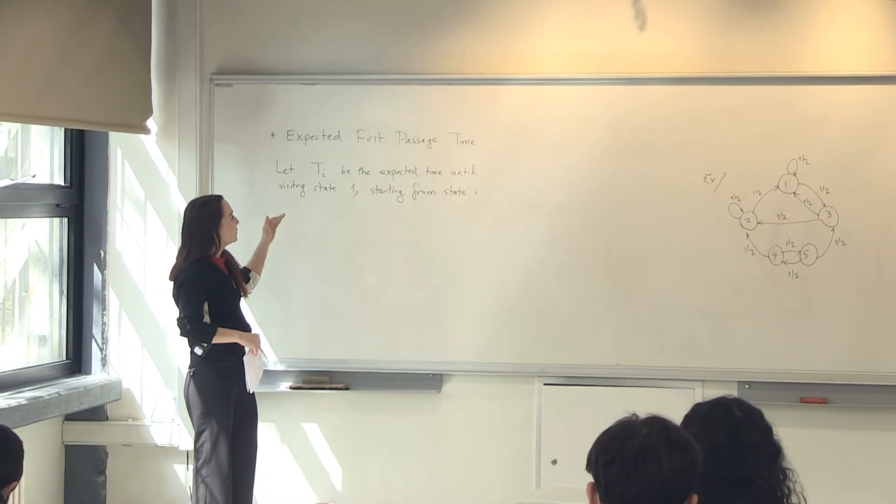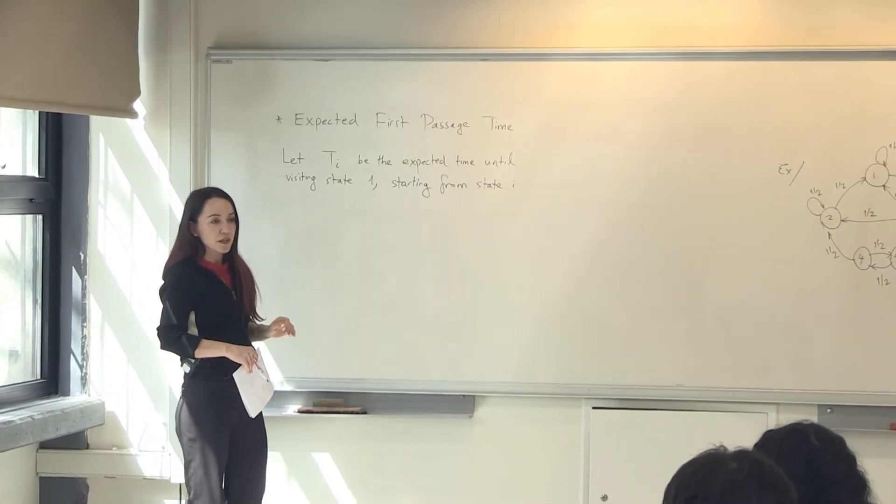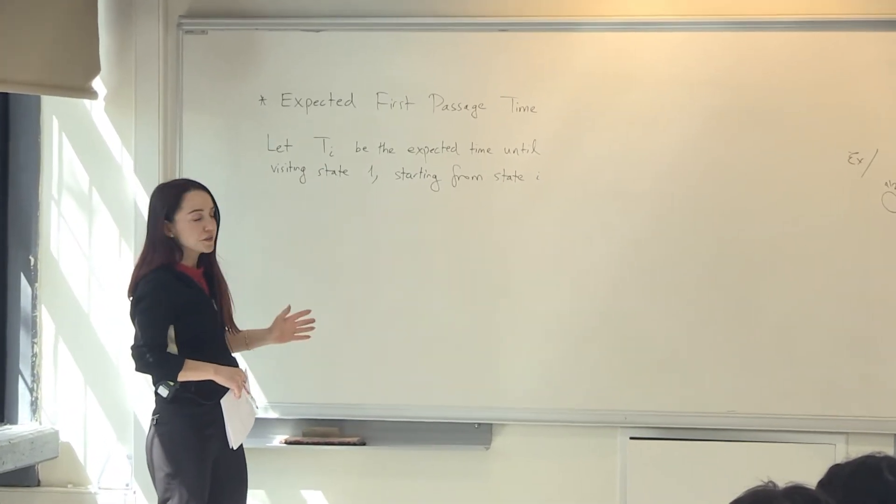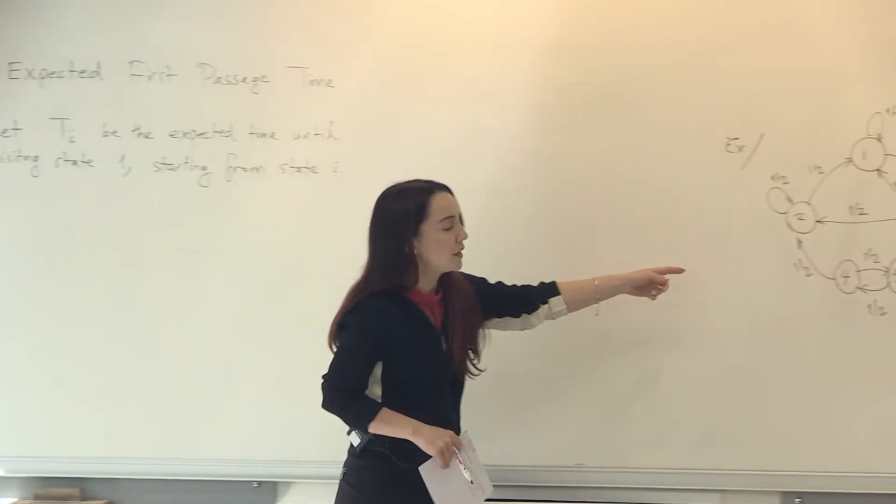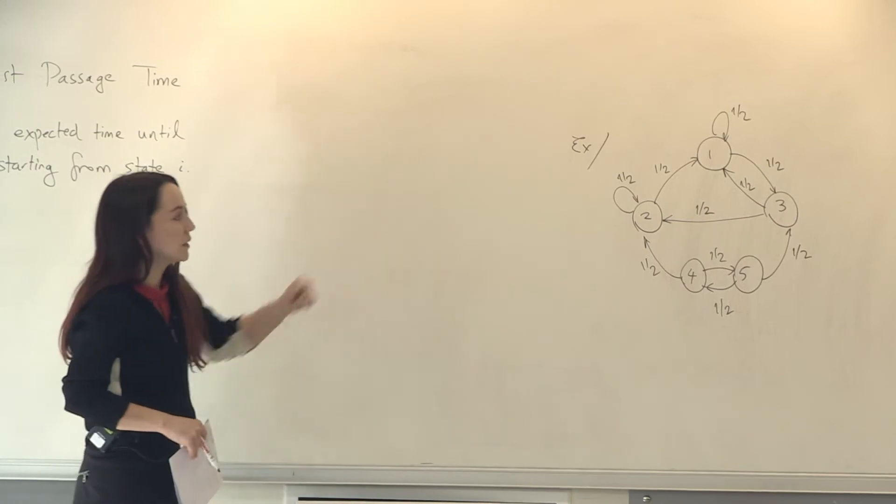This is the expected first passage time to a state, starting from any other state. So take a Markov chain like this one in the example that we discussed in the previous lecture.